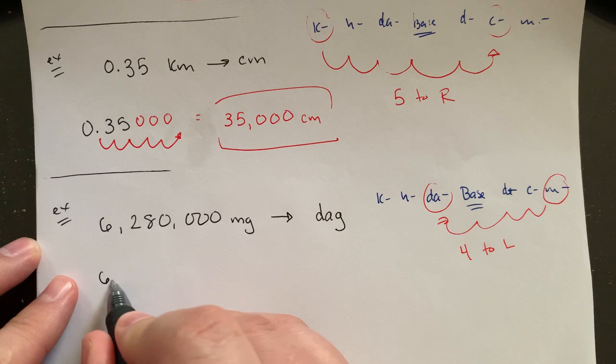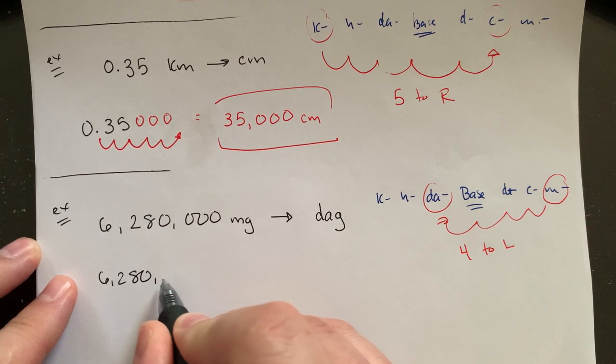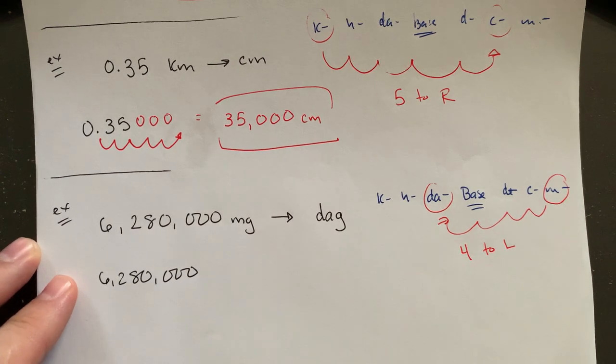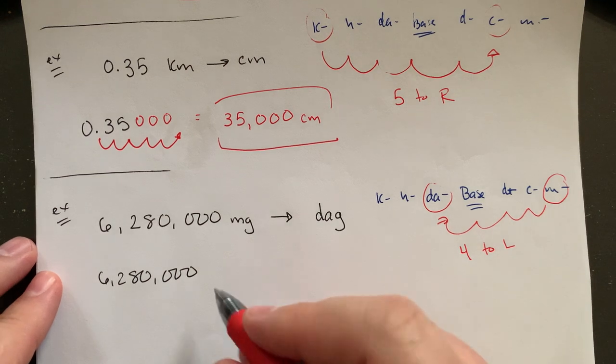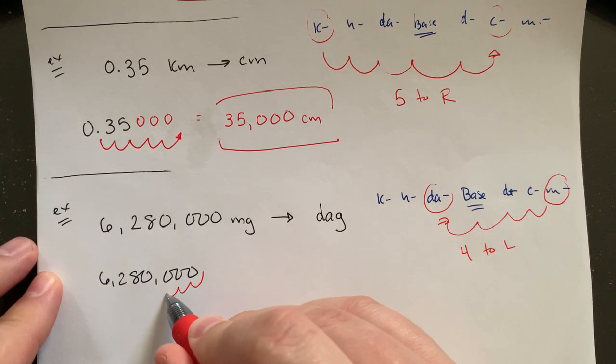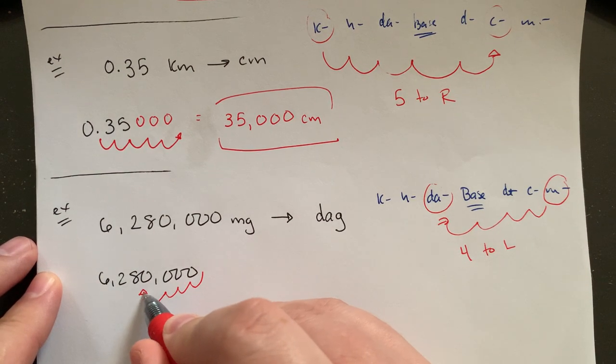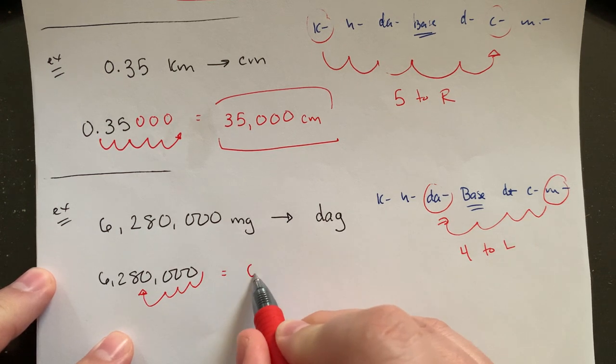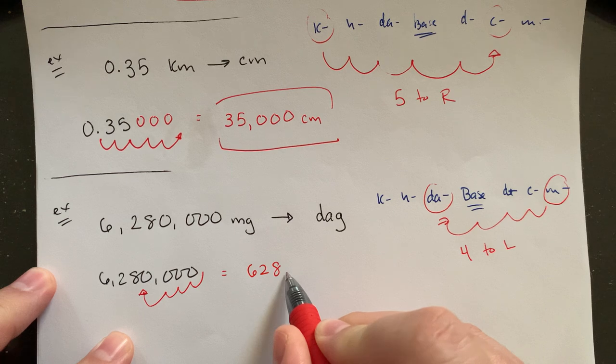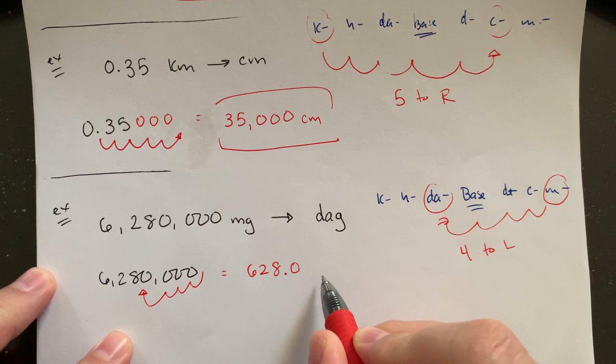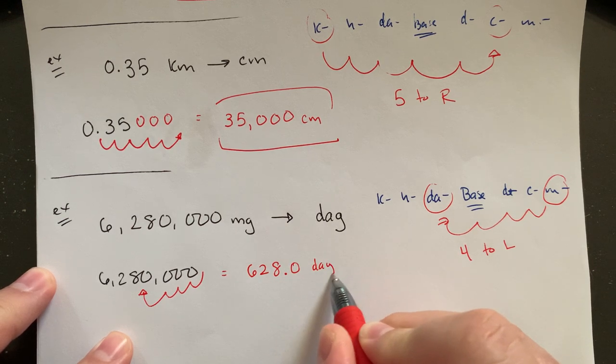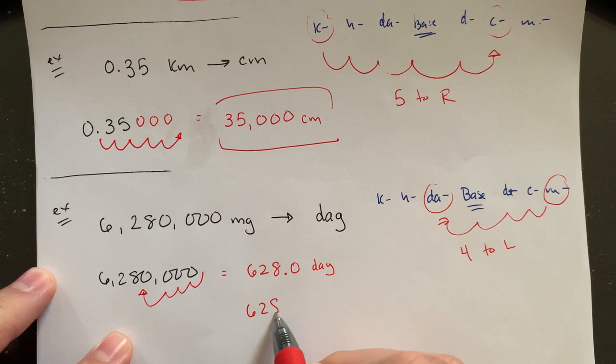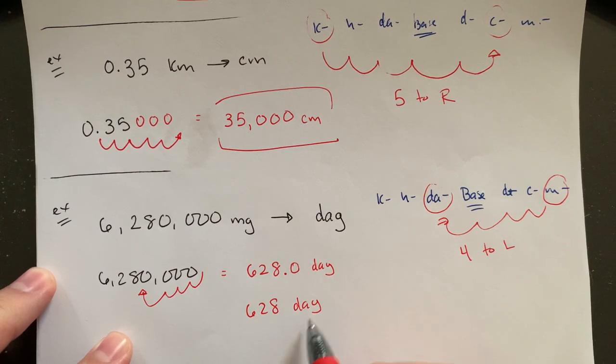That means for us 6,280,000. So we're going one, two, three, four. So that gets the decimal between the eight and the zero. That's going to become for us 628.0—that's just 628 decagrams. And that's where we'll stop.